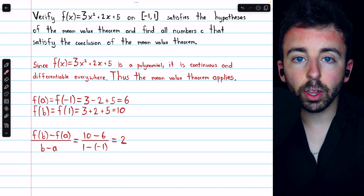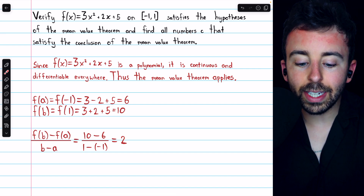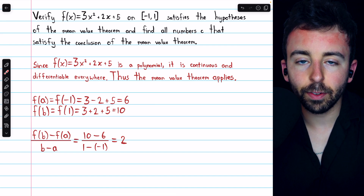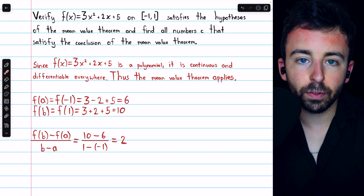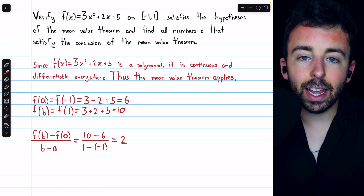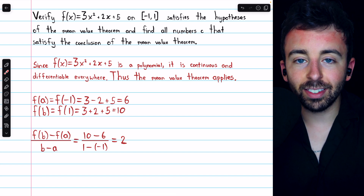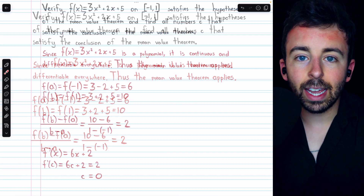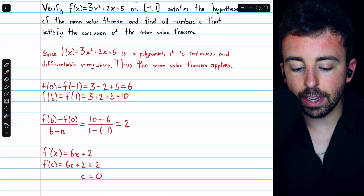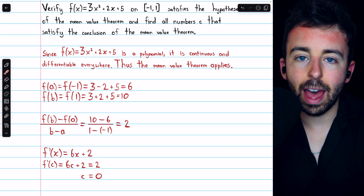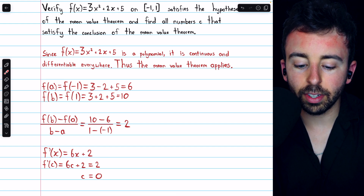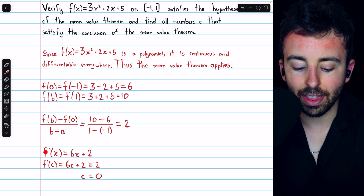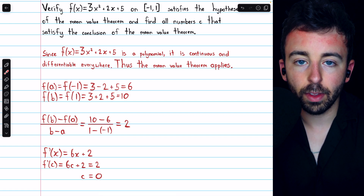So then to find the number we're looking for, we need to take the derivative of f and set that derivative equal to the average rate of change, and then solve for c to figure out where that happens. We take the derivative of f using the power rule, getting six x plus two. So f prime of x is six x plus two.